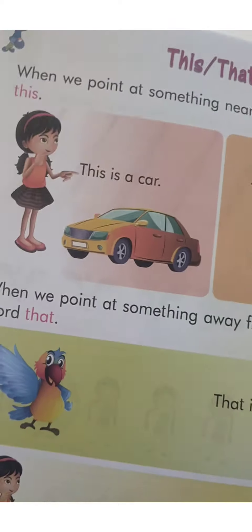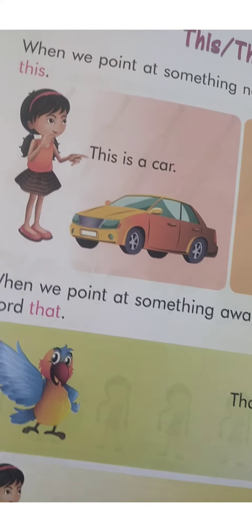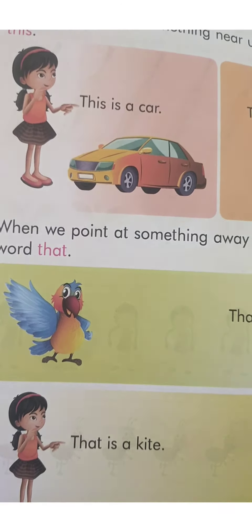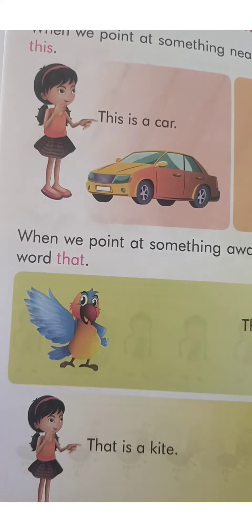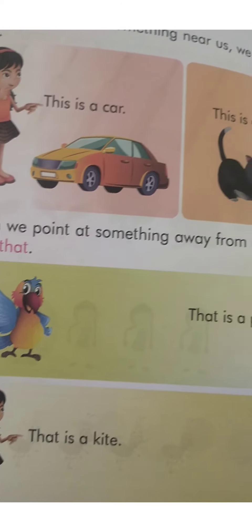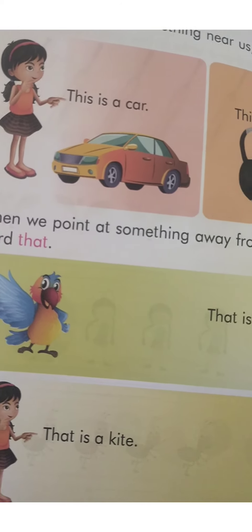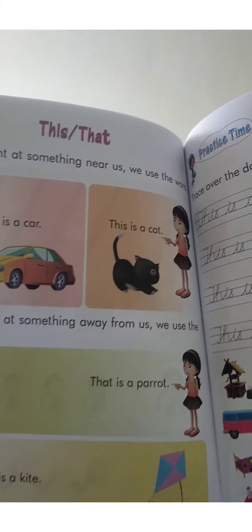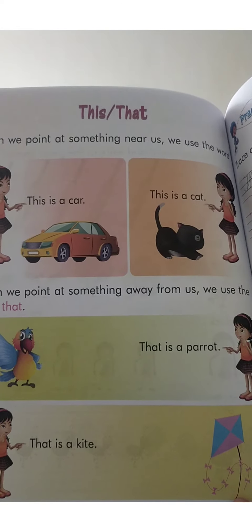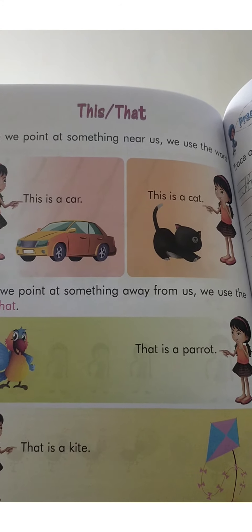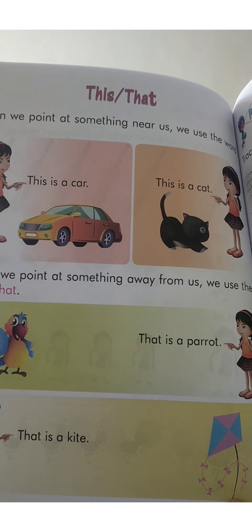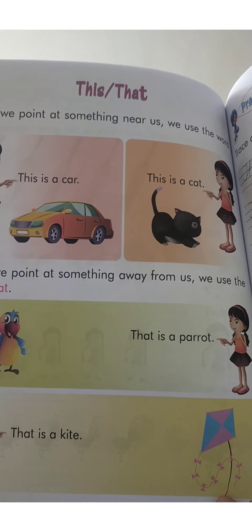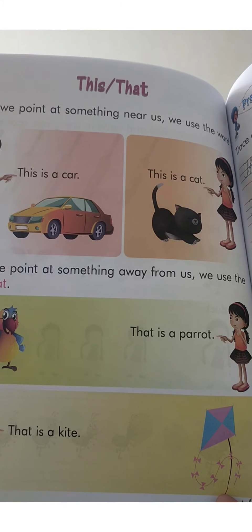We use that when we point at something that is away from us. Like in this picture you can see a parrot and a girl. The parrot is very far from the girl. So we say that is a parrot.